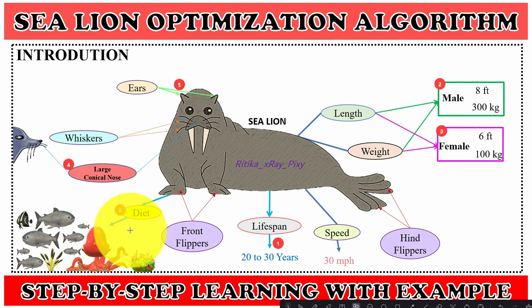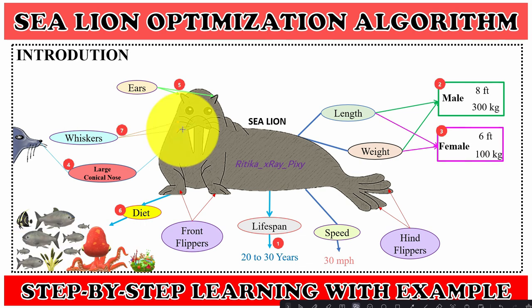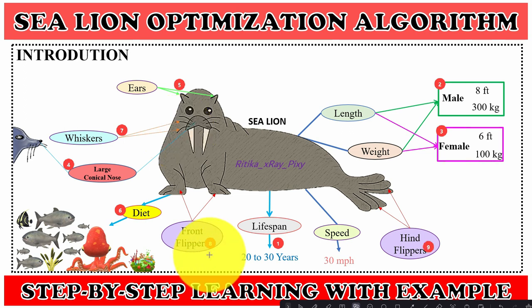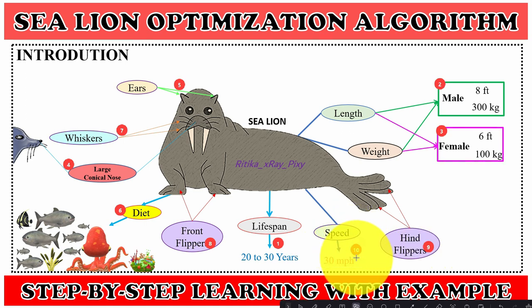Sea lions are excellent hunters. They consume large quantities of food at a time, feeding on fish, squid, octopus, and others. They have sensitive whiskers that can rotate forward — an important tool to detect nearby fish swimming movements, their location, and size. They also have front and hind flippers; sea lions can fold their hind flippers forward on the body when moving on land, which makes them appear to be walking.